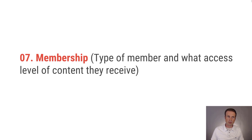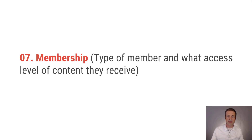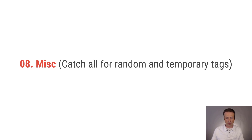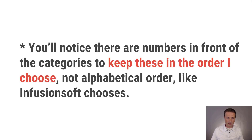Number seven is membership. A lot of people use tools like Membarium, iMember 360, or Access Alley. If you're using those plug-ins with Infusionsoft, you'd want a category called membership where anything related to that membership functionality can live. Number eight is a miscellaneous catch-all for random or temporary tags — sometimes you need tags for specific reports that you don't need afterward, and this is a good place to create those as temporary.